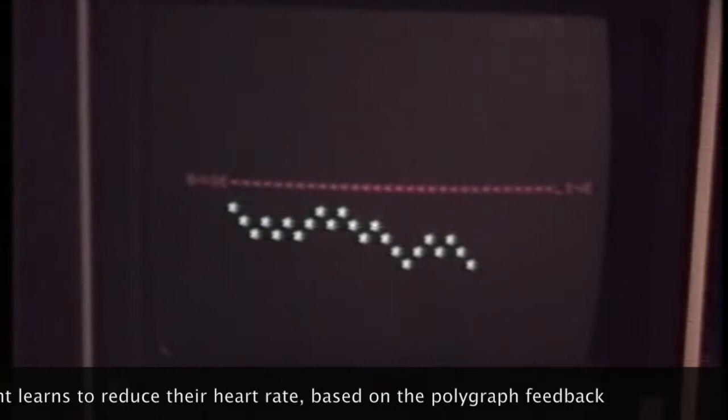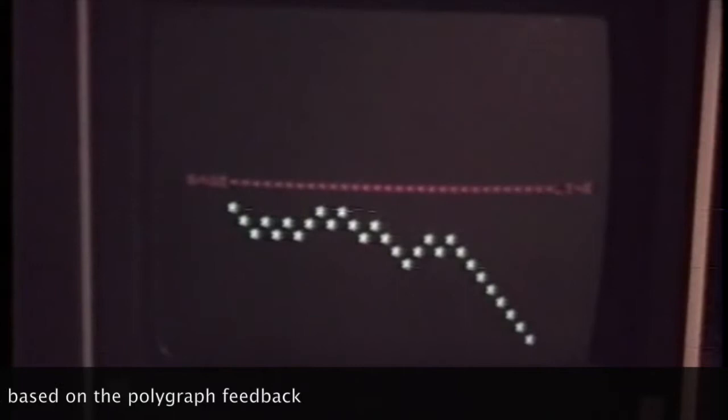The heart rate that is displayed has been derived from the polygraph and the subject is given instructions either to try and increase or to decrease heart rate. In this case you can see that the subject is successfully maintaining heart rate below the baseline position.